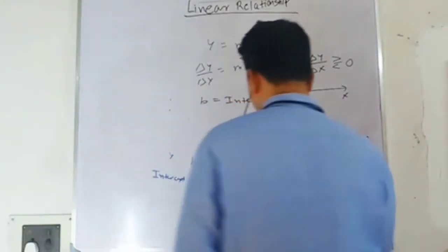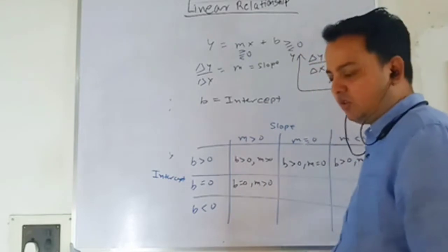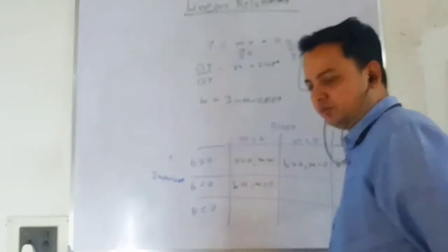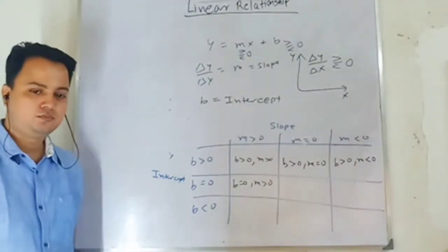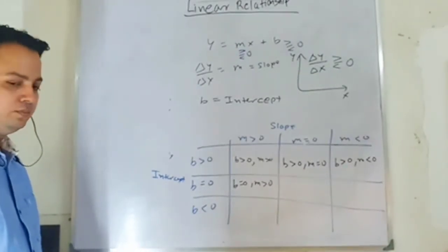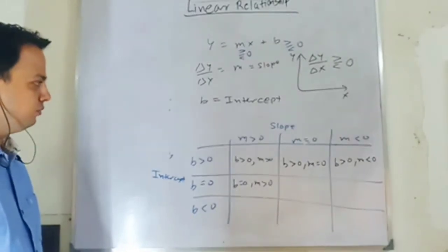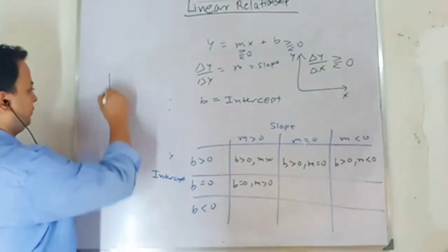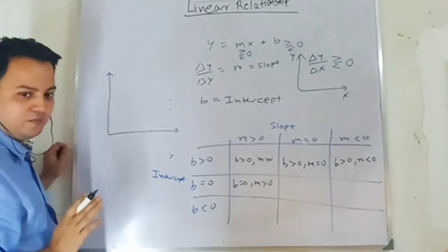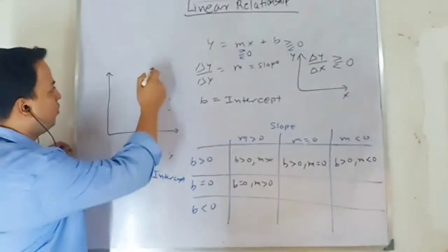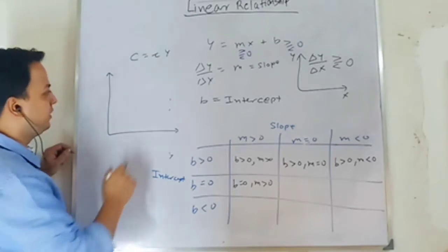Next case: b equals zero and m is positive. Here we can draw the proportional consumption function: C = c·Y. This is proportional — when income is zero, consumption is zero. As income increases, consumption increases. The graph passes through the origin with a positive slope.